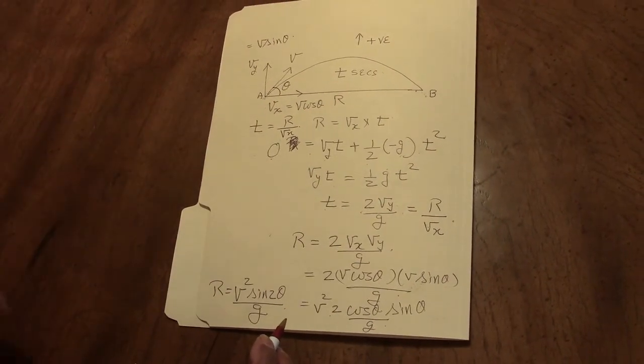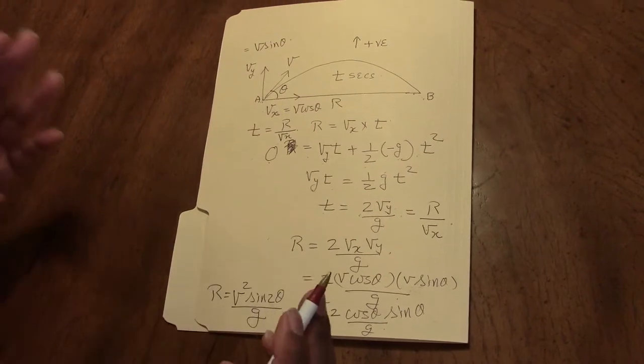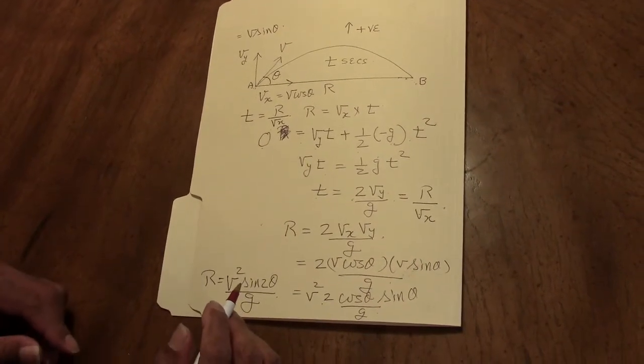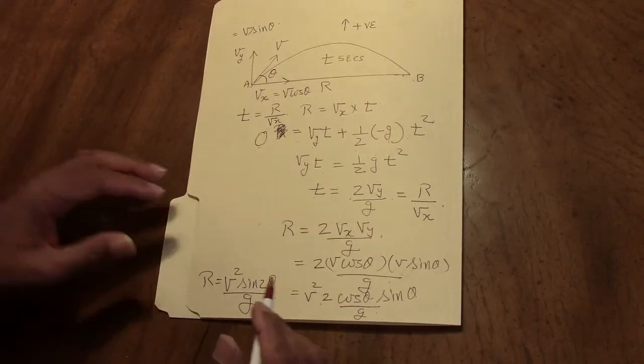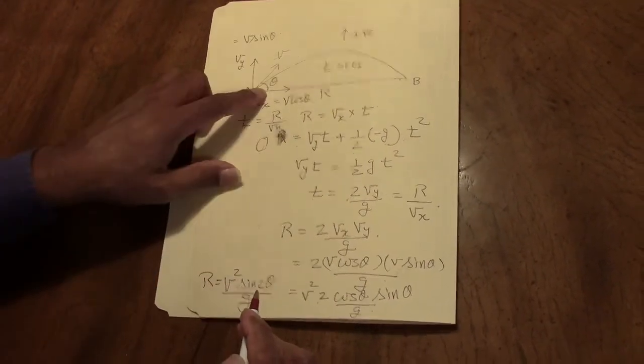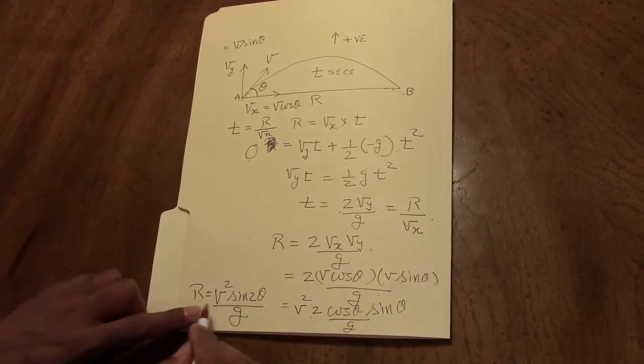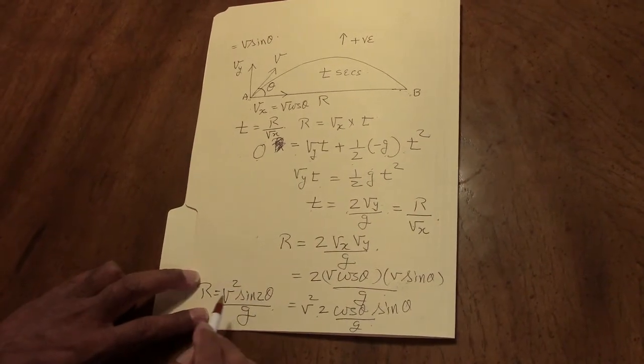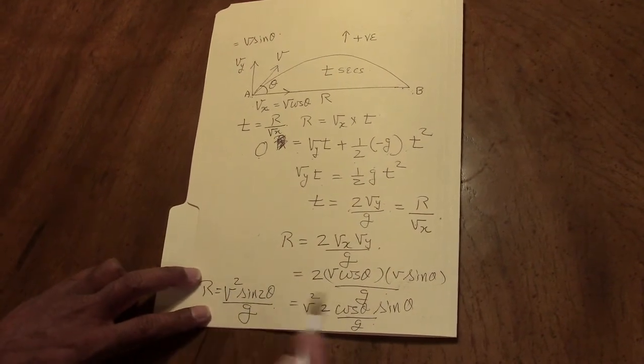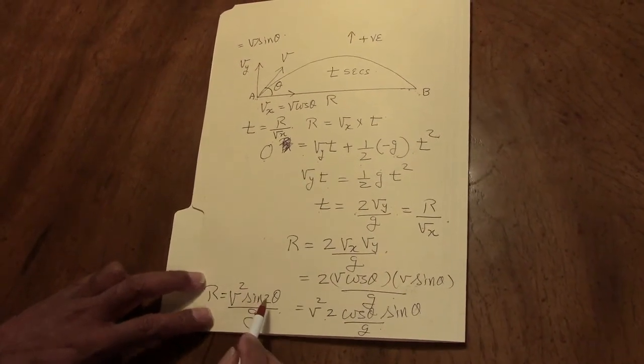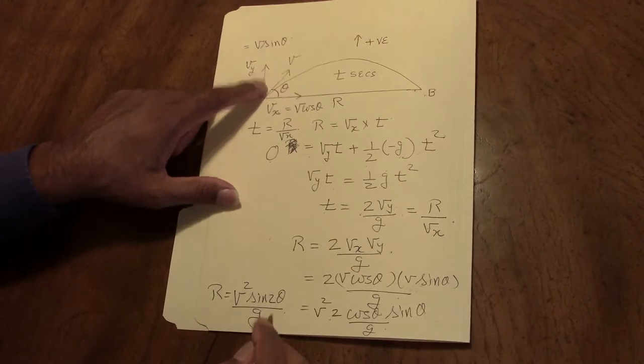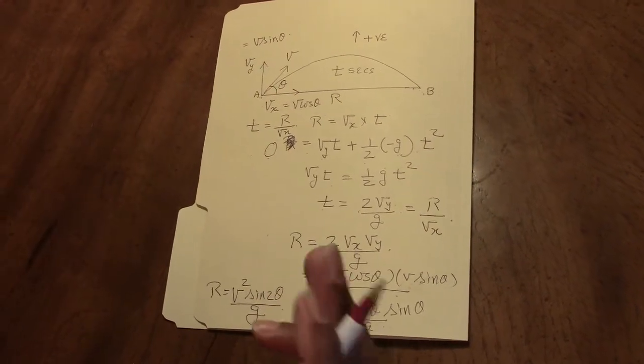So if the projectile had been fired with a velocity of 50 meters per second and theta was 37 degrees, to find the range it will be V squared, 50 times 50 equals 2500, times sine 2 theta.